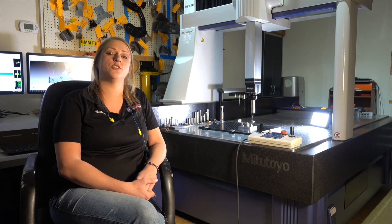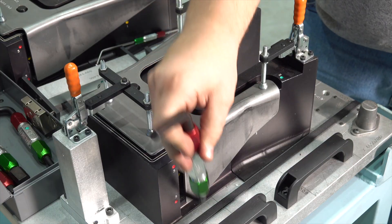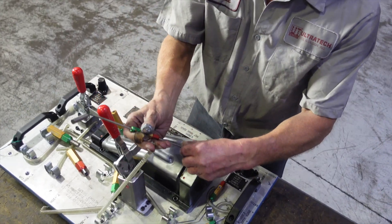Quality starts at the machines. We use check fixtures. There are flush gauges, go-no-go gauges, feeler gauges, and fit gauges.